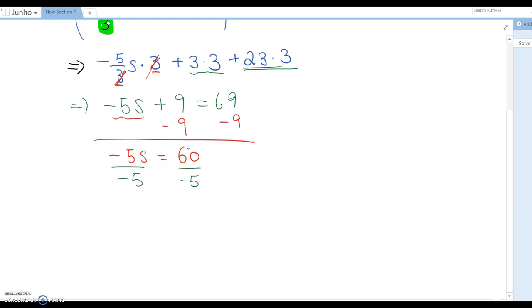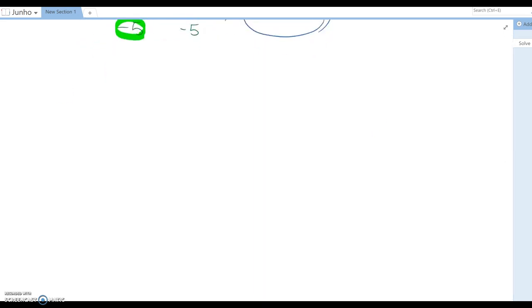You may think, why not just 5? Because we want to isolate single s, not even negative s. Therefore, you're dividing by exactly the same coefficient, which is negative 5. So we divide each term by negative 5, then the answer becomes s equals negative 12.